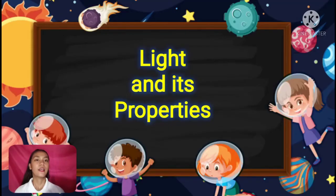How do we see things around us? Maybe you would probably say that it is because of our eyes that is why we can see things around us. But will our eyes be able to see things in the dark? No. So, we need light to see things around us. And that is our lesson for today — we are going to learn about light and its properties.